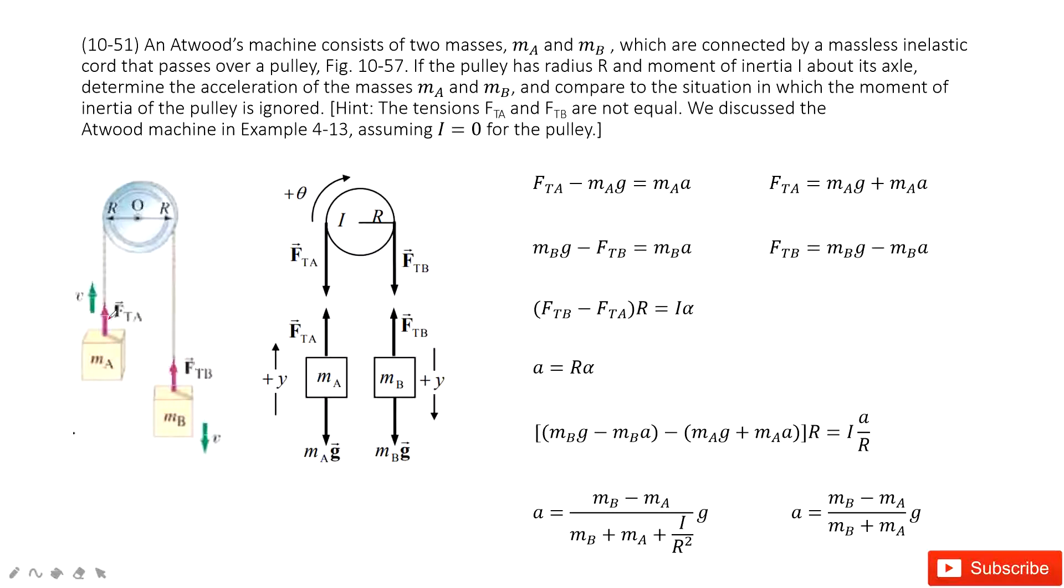And then for each, for these two objects, it's connected by a string. And it moves up for A and B moves down. Now, we need to find the acceleration for this Atwood's machine for each line.